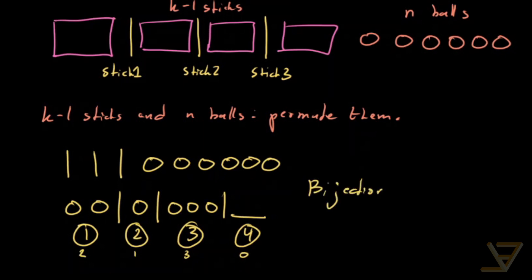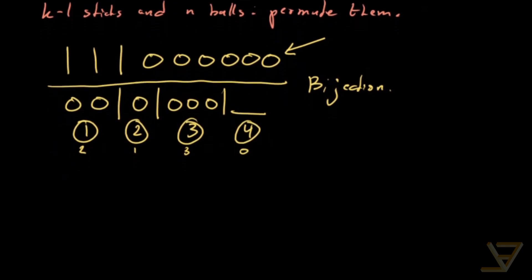Because we have an injection in the sense that each such permutation leads to a distinct way of distributing the boxes. And every way of distributing the balls is represented by permutations of this, and it only represents those kinds of permutations. So all we need to do is permute these.